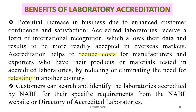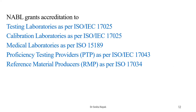Customers can search and identify laboratories accredited by NABL for their specific requirements from the NABL website or directory of accredited laboratories. NABL grants recognition to testing laboratories as per the relevant standards, calibration laboratories as per ISO 17025, medical laboratories, proficiency testing providers and reference material providers. The scope of NABL is applicable to clinical biochemistry, clinical pathology, hematology, immunohematology, microbiology, serology, histopathology, cytopathology, genetics, nuclear medicine and many other areas.